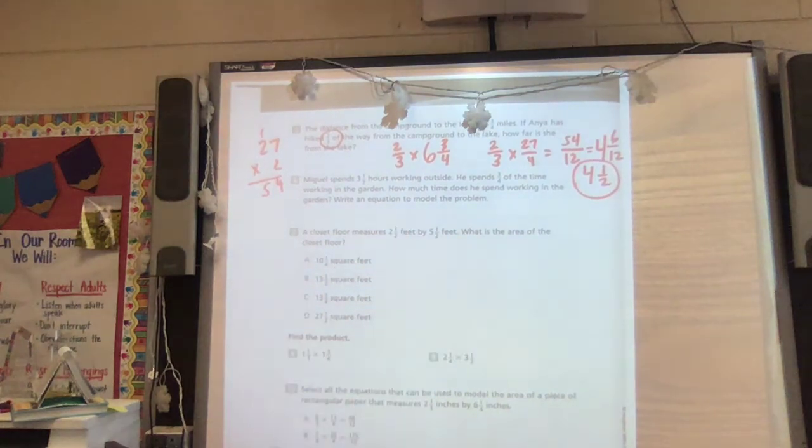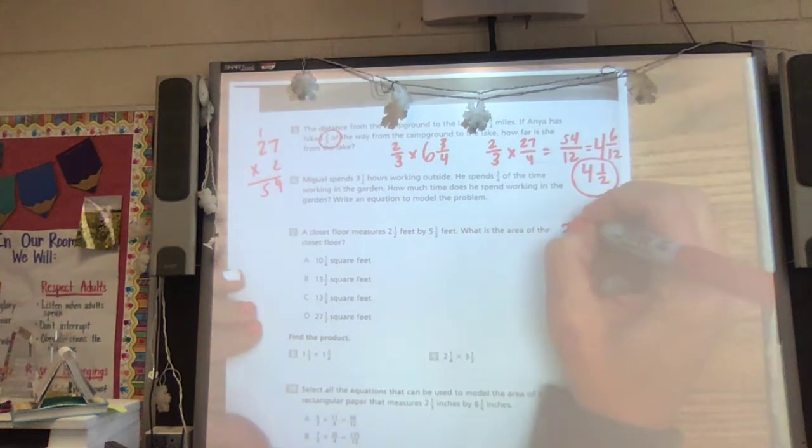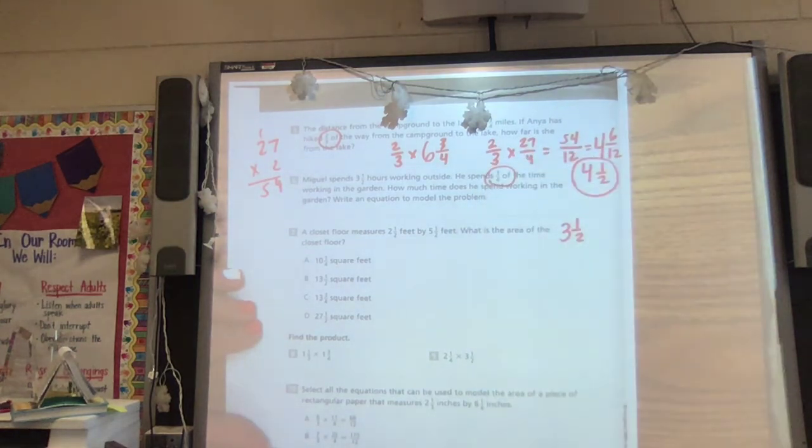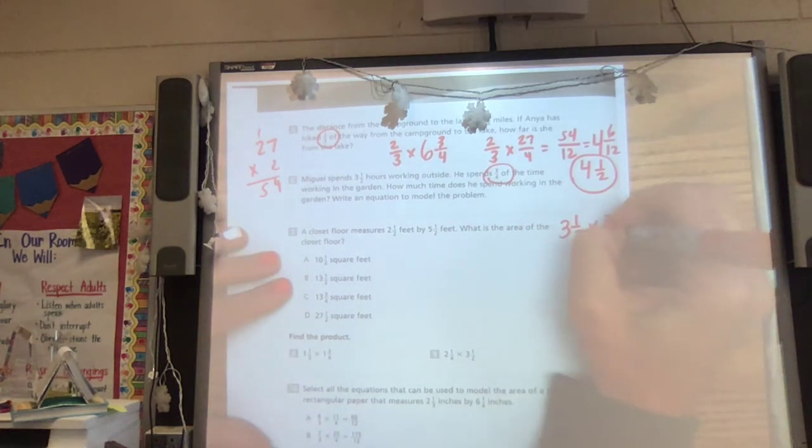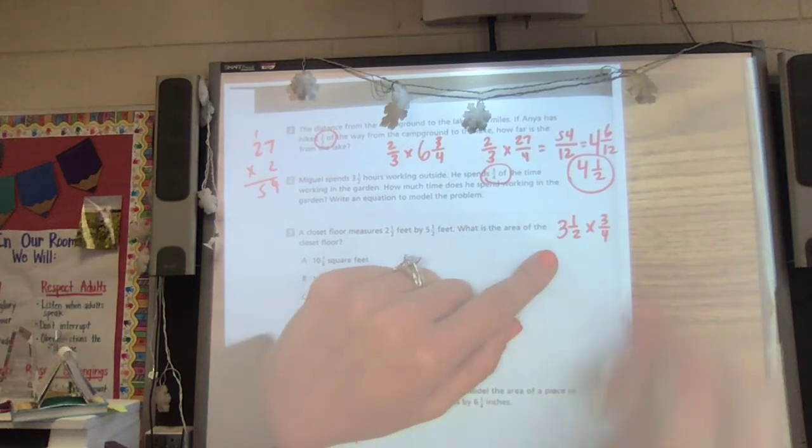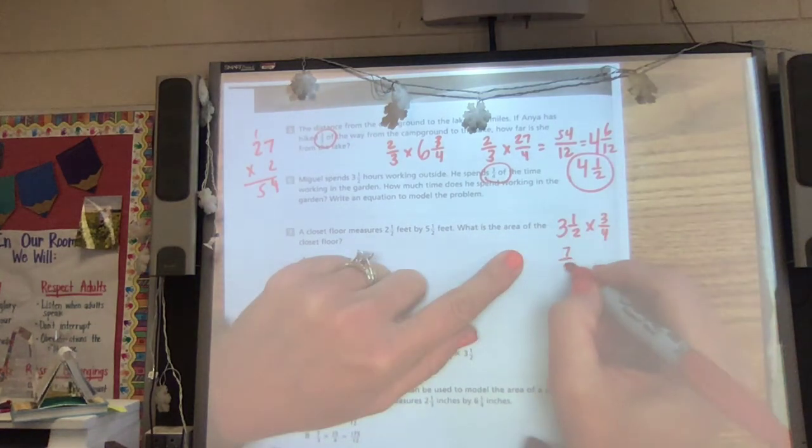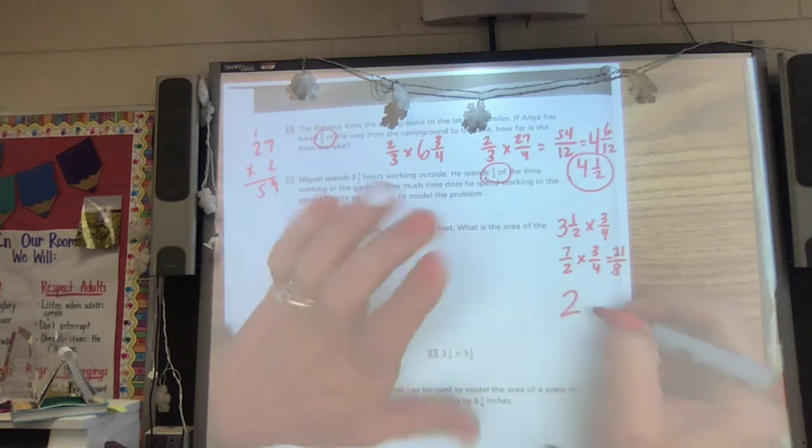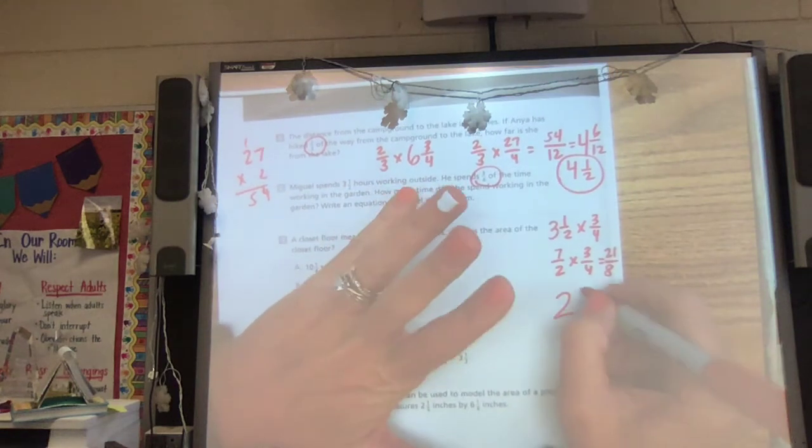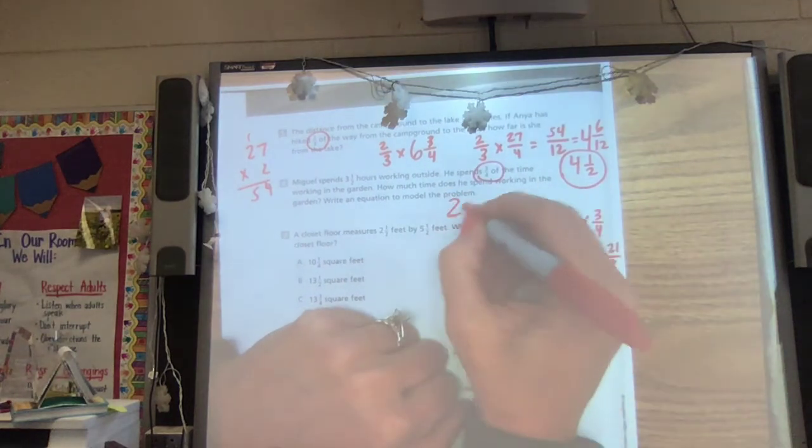Number six, Miguel spends three and a half hours working outside. He spends three fourths of that time working in the garden. How much time does he spend working in the garden? Write an equation. Three fourths of the three and a half. So a lot of his time is spent in the garden. Three times two is six plus one is seven halves times three fourths. Seven times three is 21 eighths. Eight goes into 21 two times because that's 16, 17, 18, 19, 20, 21, and five eighths. Two and five eighths is close to three and a half. He used almost all of his time there.